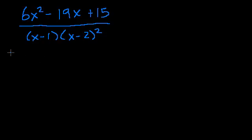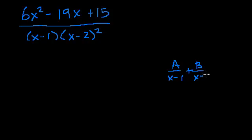You might say this is a little bit different, because what do I do here? I have this first-degree factor but it shows up twice. It wouldn't make sense to write a/(x-1) + b/(x-2) + c/(x-2), because the b and c would just add together since they have the same denominator — you could view them as one variable. So this wouldn't make sense as a partial fraction expansion.